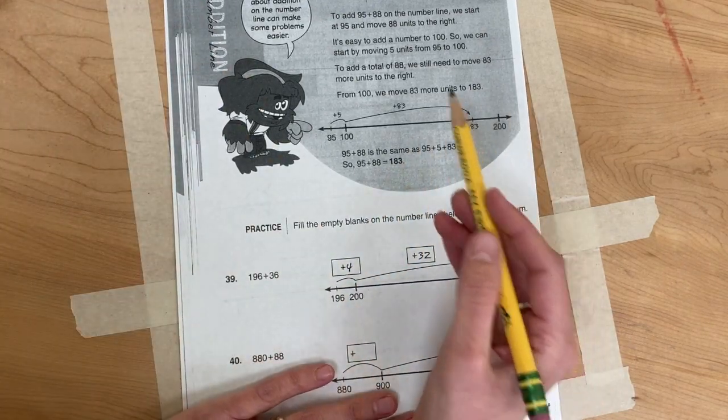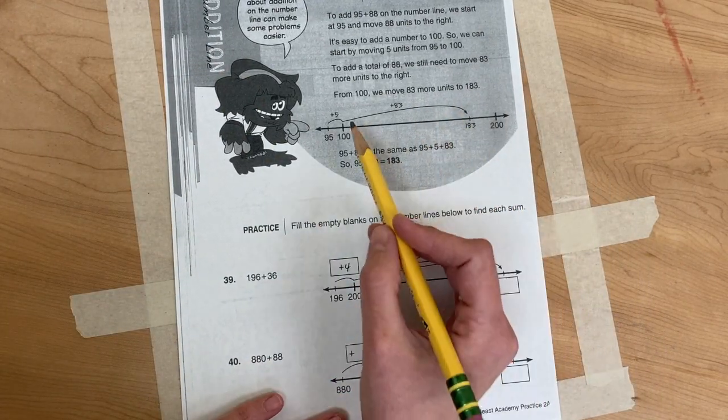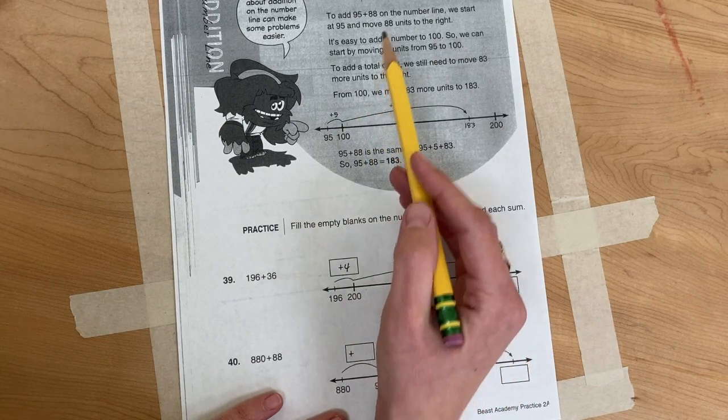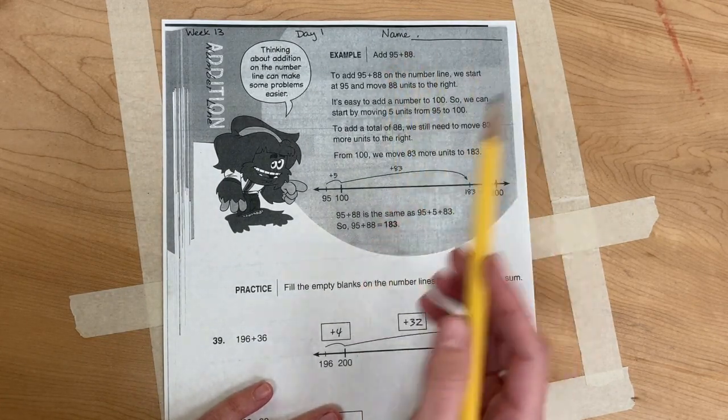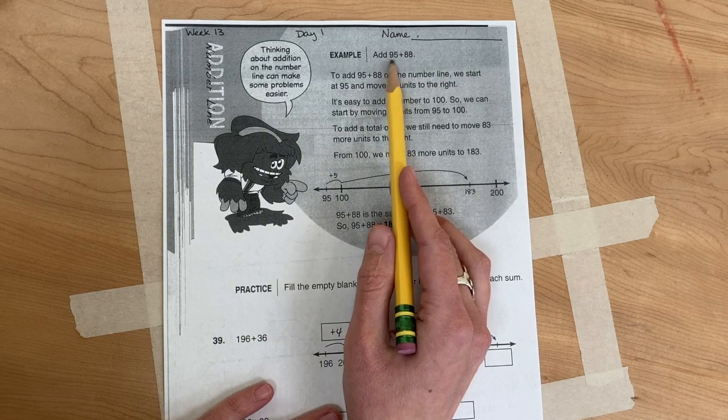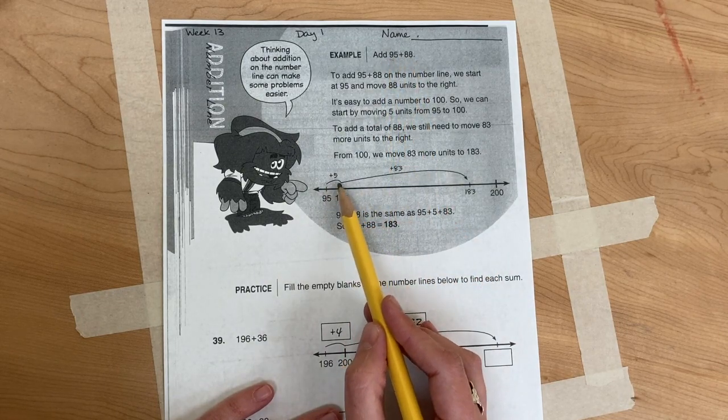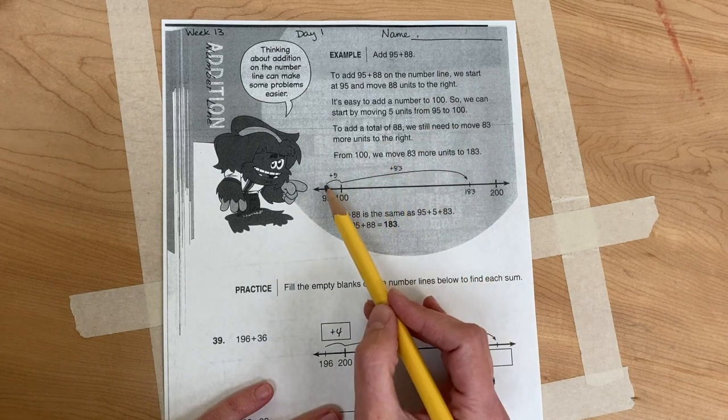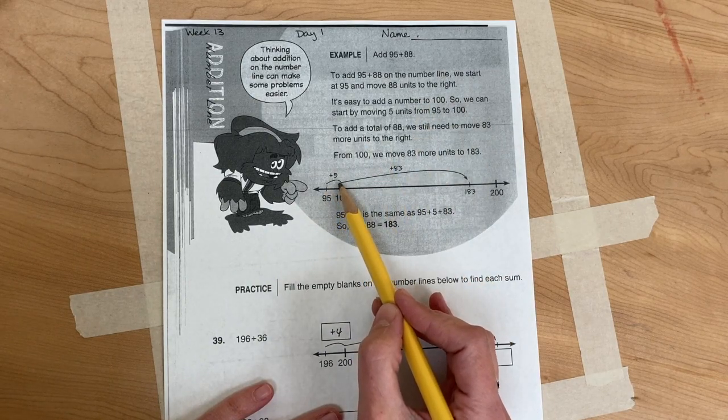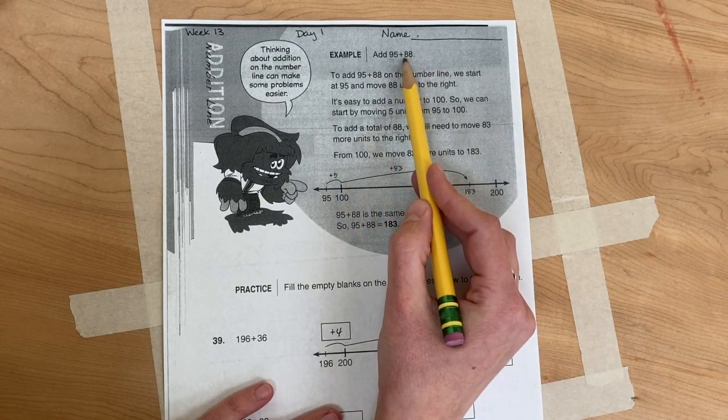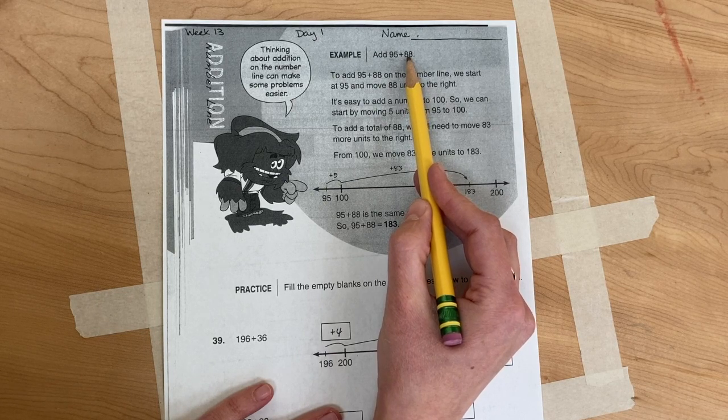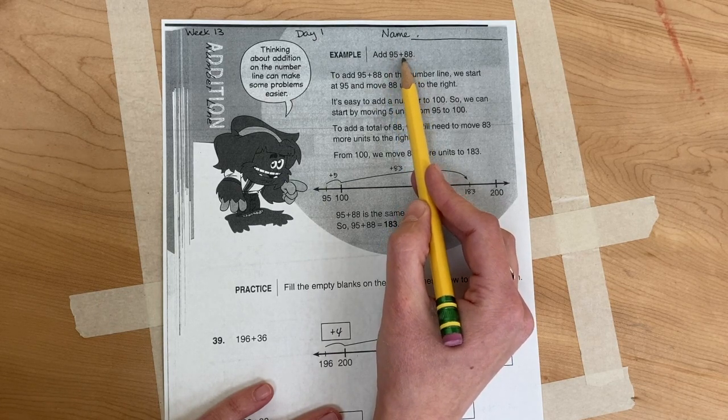So I just want to break this down for you. If we have 95 plus 88, we're looking at this and saying, well, 95 is really close to 100. We just have to add 5 to get to 100. So if we're already adding 5 here, that means that we're going to take away 5 from the 88.